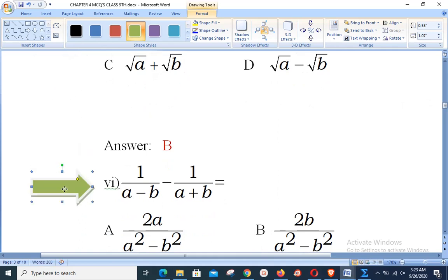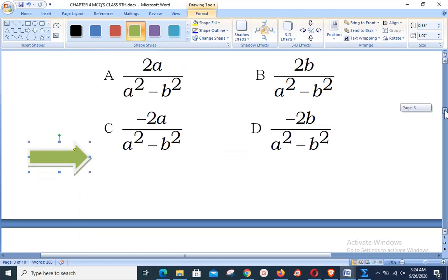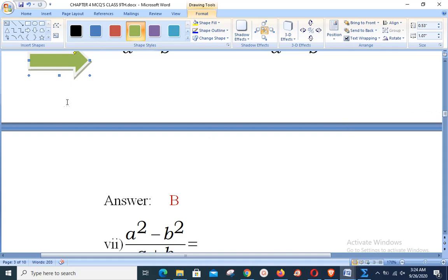Next we have 1 over a minus b minus 1 over a plus b is equal to dash. Very simple and easy question. Between two fractions there is a sign of minus, so you will have to take the LCM, that is the product of two denominators: a plus b into a minus b. This a plus b multiplied with the first numerator, that is 1, will remain the same. The minus sign will change the sign of these two. So overall you will be having a plus b minus a plus b, that makes option B as correct. You may solve on the rough page.